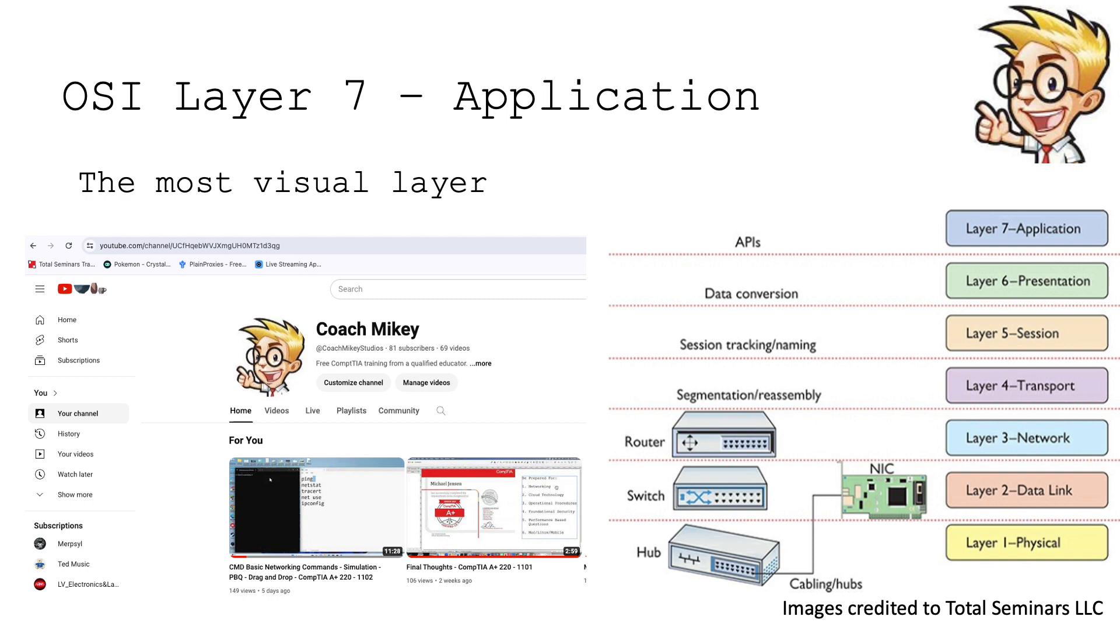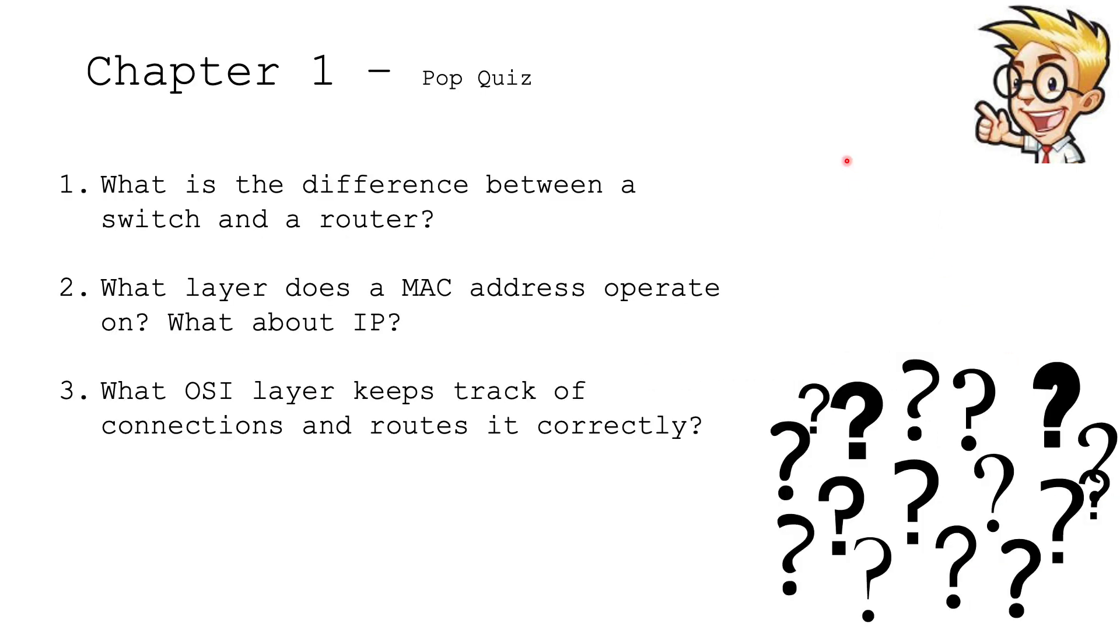Let's go into some pop quizzes like I usually do. Pop quiz. I'm going to read all three of them, and you can think. If you know the answer, you can shout it out or put a comment in the video. What is the difference between a switch and a router? That's question one. Yeah, they are different. Question two: What layer does a MAC address operate on? And what about IP addresses? Number three: What OSI layer keeps track of connections and routes it correctly? So think about those questions and answers. We're going to answer them right now.